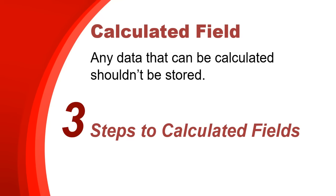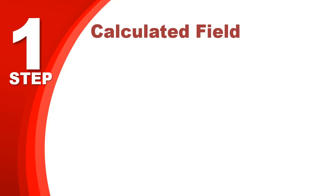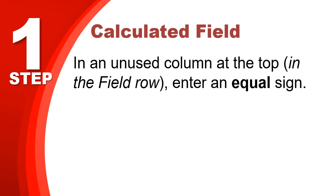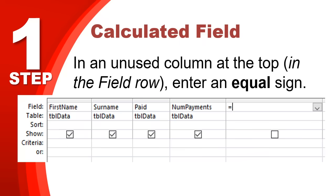There are three steps to calculated fields. If you don't know how to do a calculated field, follow this three-step program. Step one: in the unused column in your query design, right at the top in the field row — not in the criteria row, but the field row — enter an equal sign. So in a query where we've selected first name, surname, pay, and number of payments, in a new column at the top in the field row, that's where you put the equal sign.